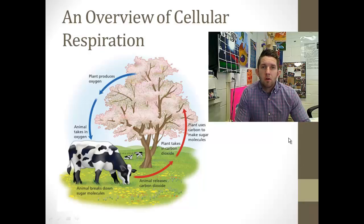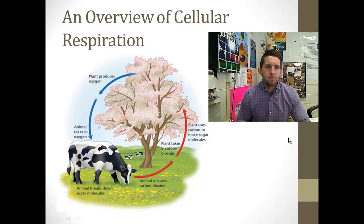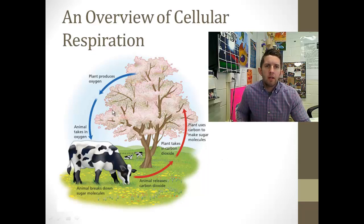Alright, so now that you guys are experts on photosynthesis and the ways of fixing atmospheric carbon into glucose, we're going to talk about the next step. We're going to talk about what we do with that glucose — now that we have this organic sugar produced, how do we utilize it? This is a decent graphic about the interrelatedness between photosynthesis and our next metabolic process: cellular respiration.